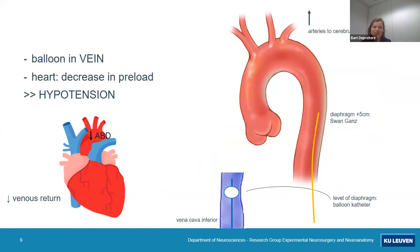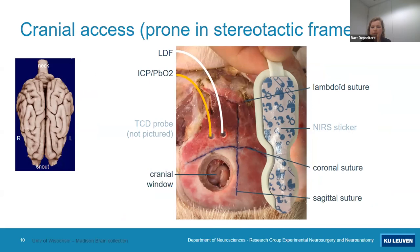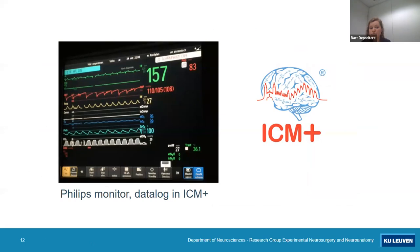When we inflate the aortic balloon, we increase afterload and the pig becomes hypertensive. Alternatively, we place a balloon in the vena cava — inflating it decreases preload, making the pig hypotensive. For the cranial axis, we are mainly interested in flow. We place a cranial window anterior to the coronal suture, put a glass over it, and attach a camera to make movies measuring diameters and flow. We also place ICP and PbO2 probes and a laser Doppler flowmeter. This allows us to look at pial arteries and measure diameter.